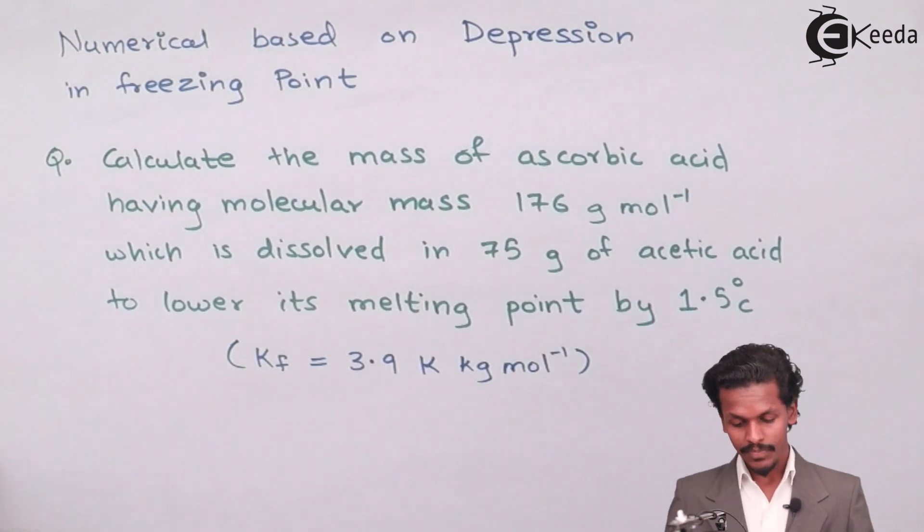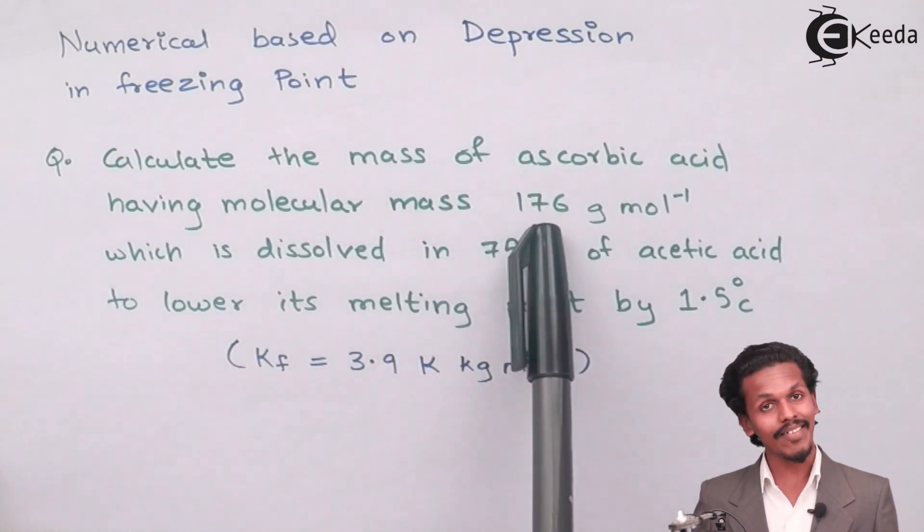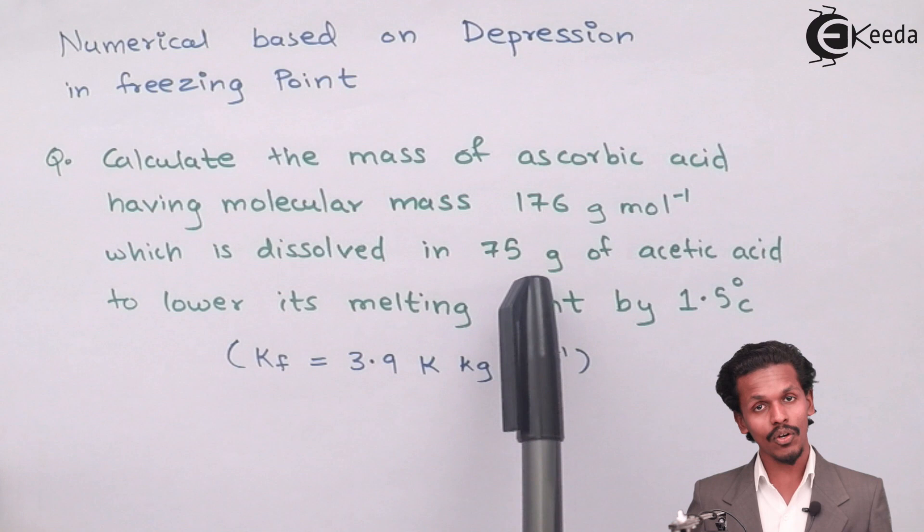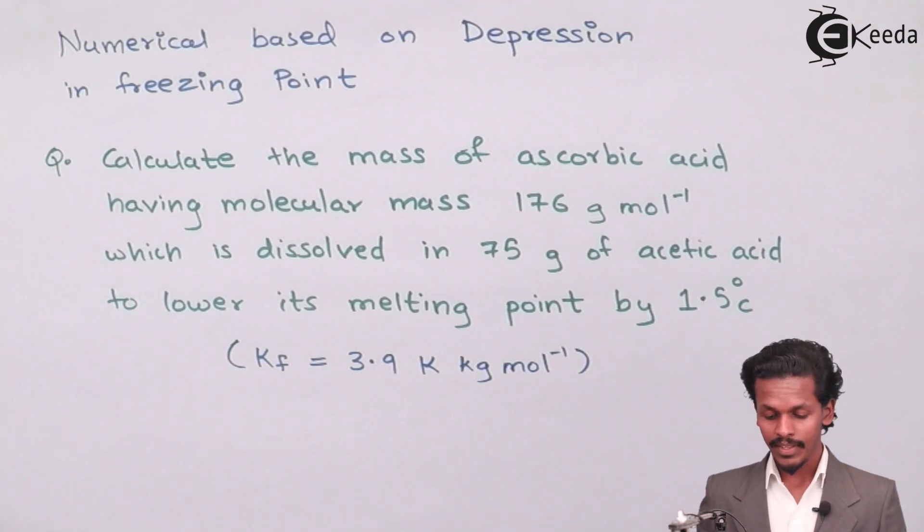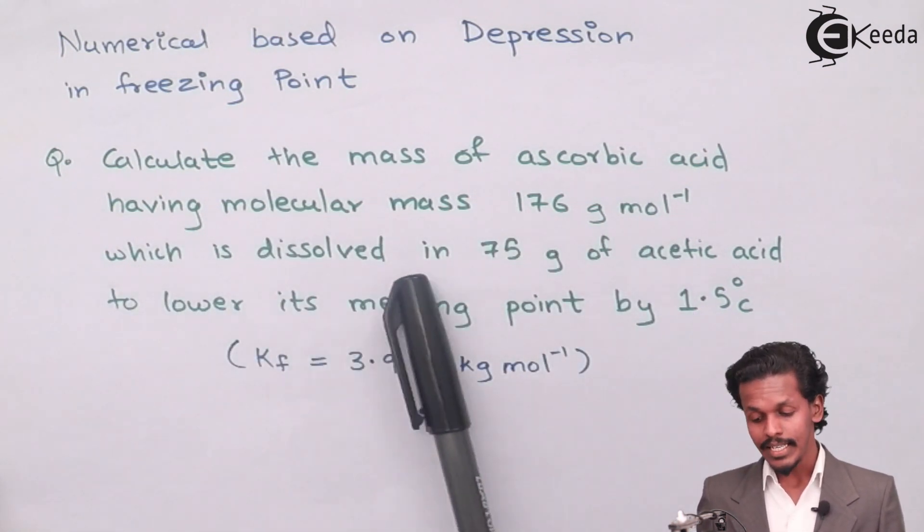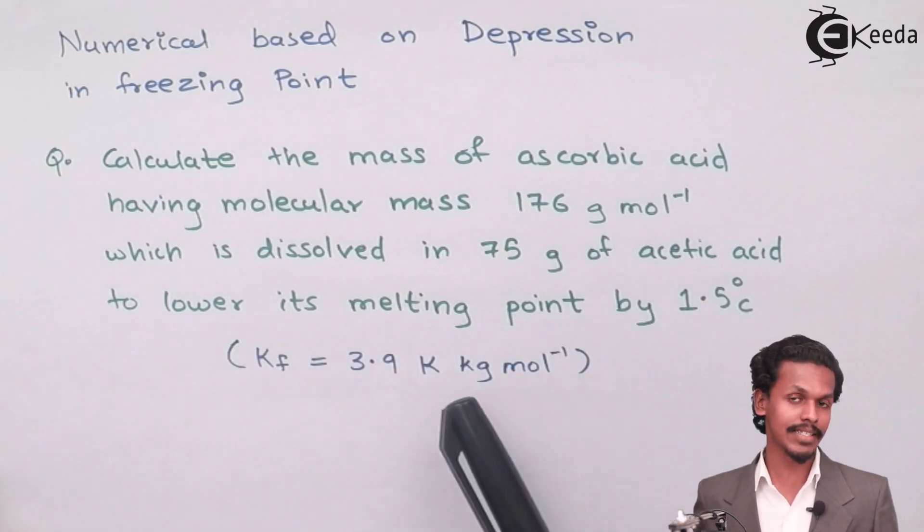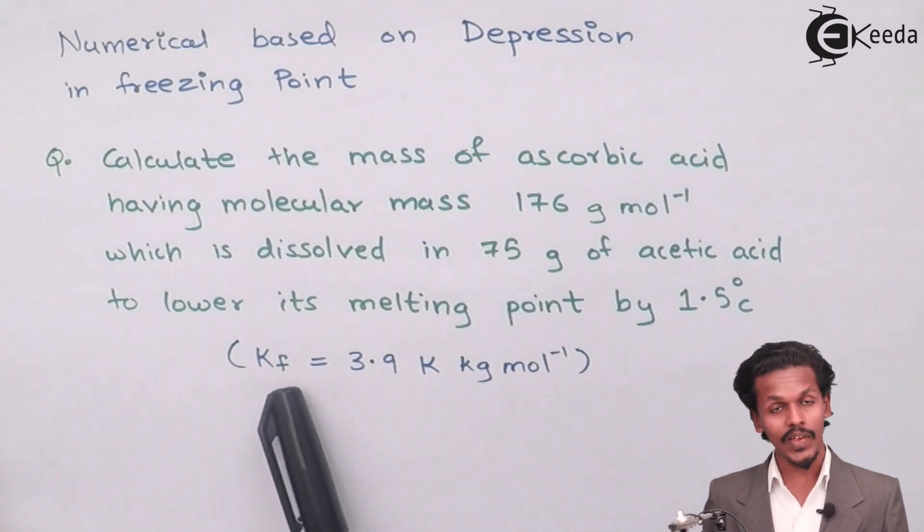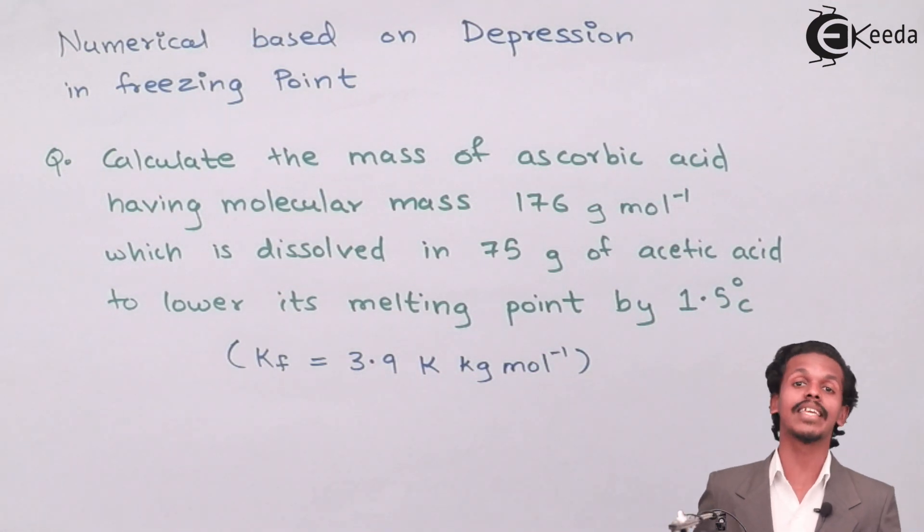In the given question we have to calculate the mass of ascorbic acid having a molecular mass of 176 gram per mole which is dissolved in 75 gram of acetic acid to lower its melting point by 1.5 degree Celsius. The cryoscopic constant KF is 3.9 Kelvin kg per mole. Let us extract the given data.